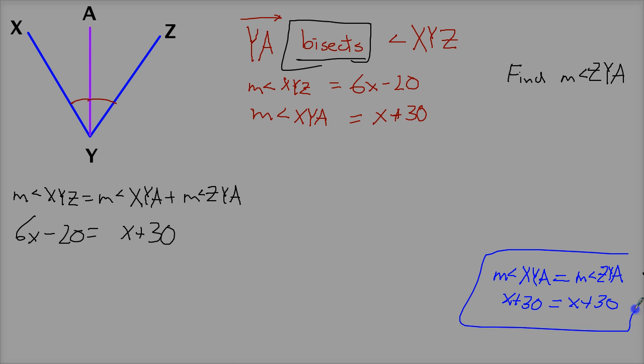Now this part of the problem may be different depending on what information they give you. If they give you the value for XYA and they give you ZYA, but they never give you this, you can actually solve for X right now. I mean, you can solve for X here, but why would you?